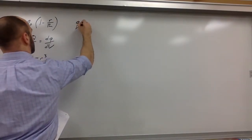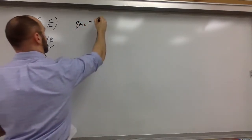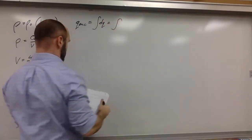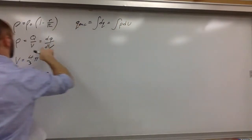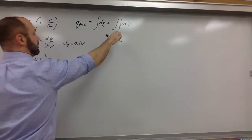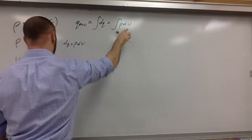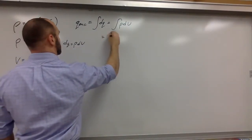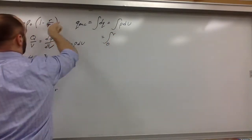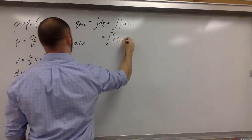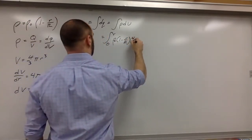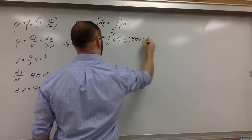Now let's find Q_enclosed. Q_enclosed is found by adding up all the little pieces of charge: the integral of rho dV. Since dq = rho dV, I now have a function for rho and an expression for dV, so I can substitute. This integral goes from zero to little r — because we're looking inside — and rho is rho-naught times (1 minus r/R), and dV is 4 pi r squared dr.